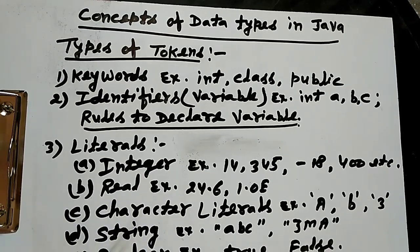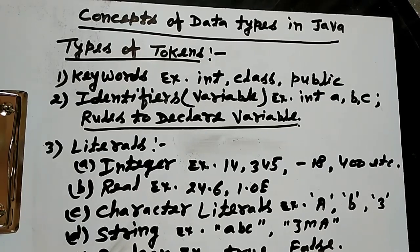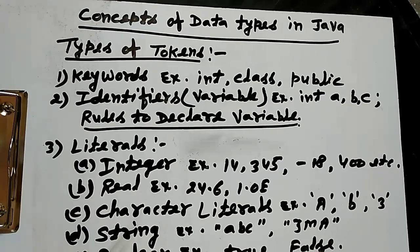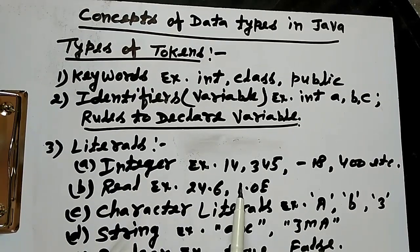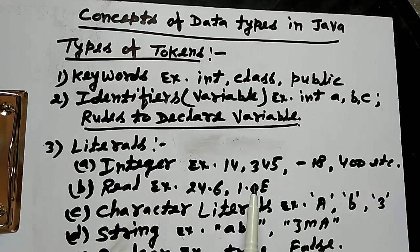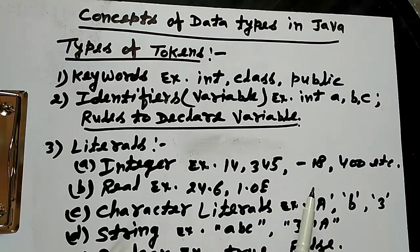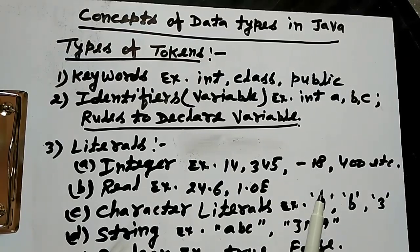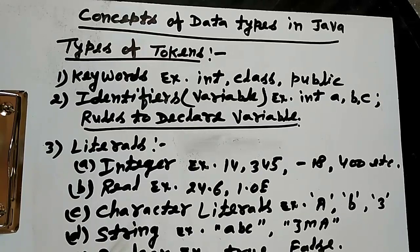This is the integer literal. Integer literal means a value without the decimals stored in the variables. It is called the integer literal. 14, 345, minus 80, 400, etc. These are the examples of the integer literal. This value cannot contain the decimal.